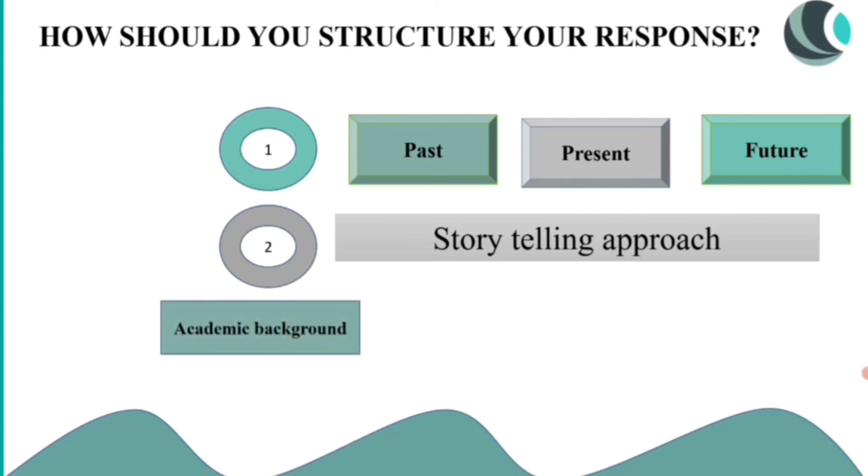While you're answering about your past, you have to talk about your academic background because one of the most important reasons why the recruiter is sitting in front of you is because you've done something in your academic background. You'll have to talk about the achievements you've got during this academic background, and you can talk about co-curricular activities and sports as well.